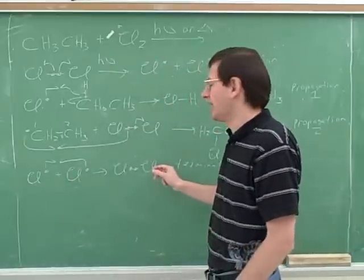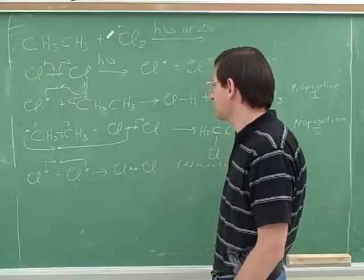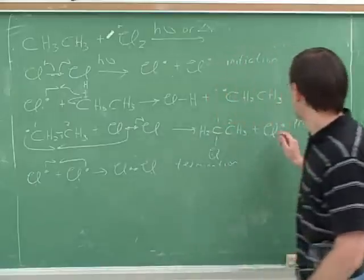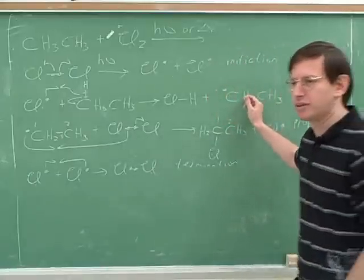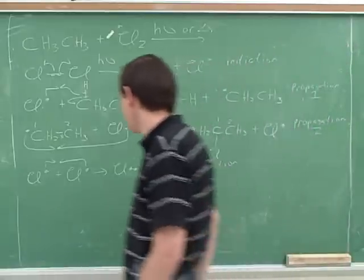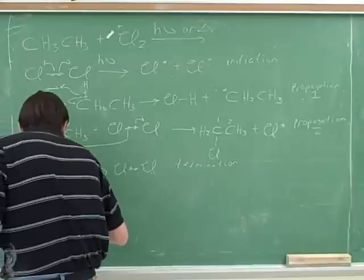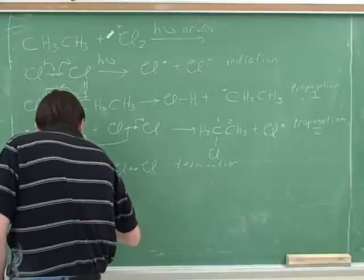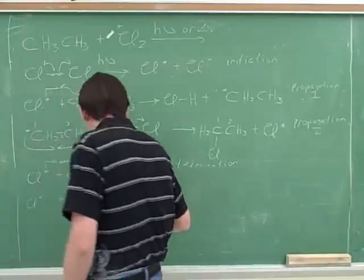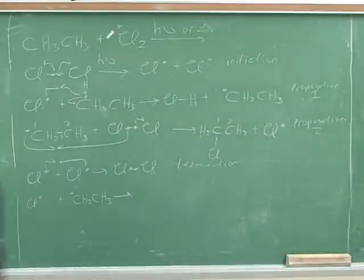And then that will kind of end that chain reaction there. However, if you think about it, those are not the only two radicals around. For example, this chlorine could bump into an ethyl radical, because in the mix there's also ethyl radicals. Let's see if you can draw in the arrows and the products for how these two would react. It's pretty similar to the other termination step.